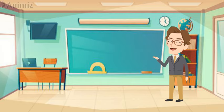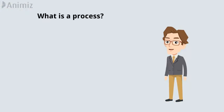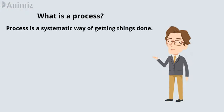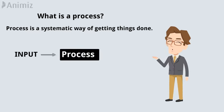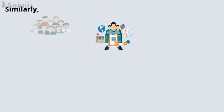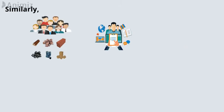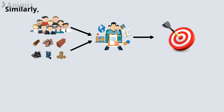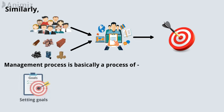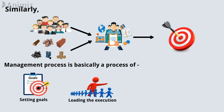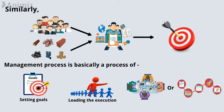First of all, you need to know what is a process. Process is a systematic way of getting things done. It converts input into output. Similarly, management is a process where human resources and material resources are brought together to fulfill the objectives of an organization. Management process is basically a process of setting goals and leading the execution of any type of activities, such as a project or a process.